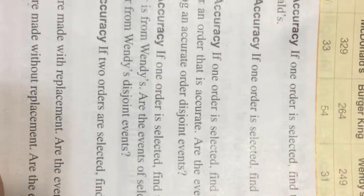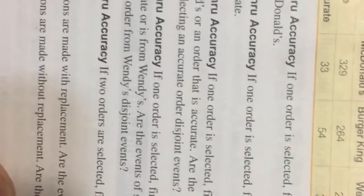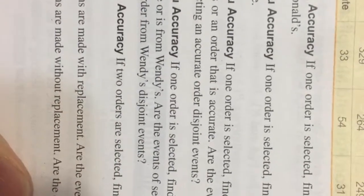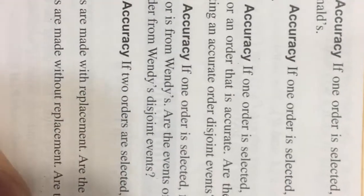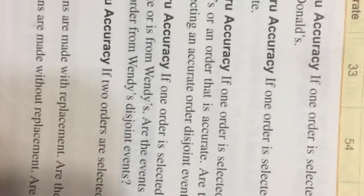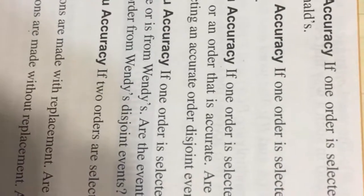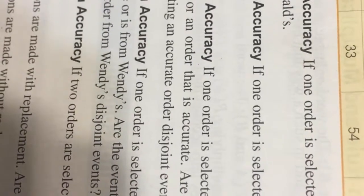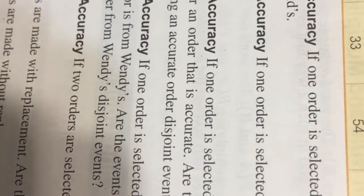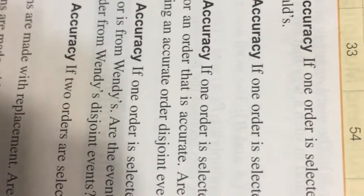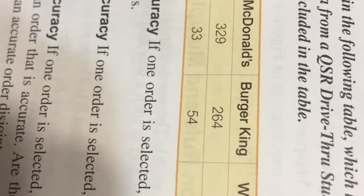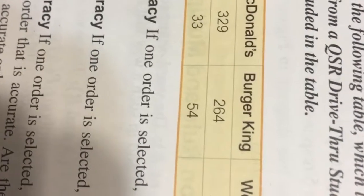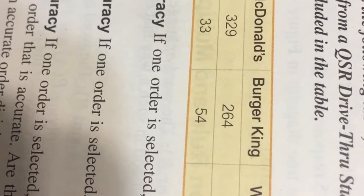The first problem we're going to do is number 11, and it says the fast food drive-through accuracy. If one order is selected, find the probability of getting an order for McDonald's or an order that is accurate. Are the events of selecting an order for McDonald's and selecting an accurate order disjoint events? Looking at the table for this exercise, there are indeed accurate orders from McDonald's.